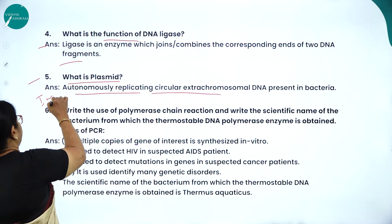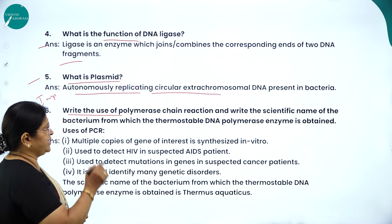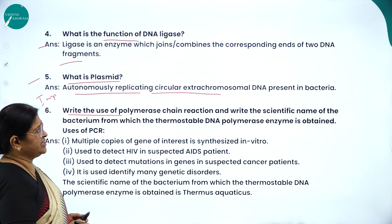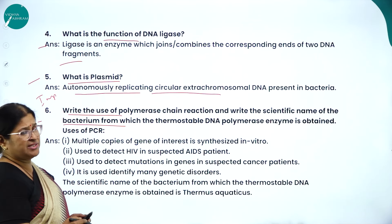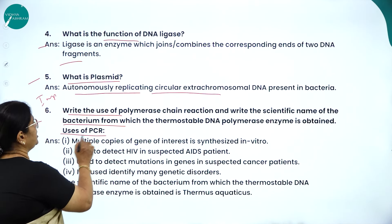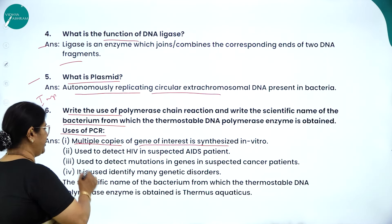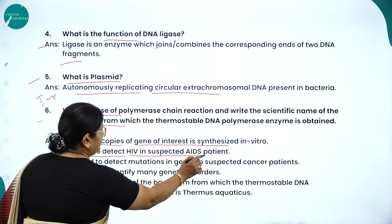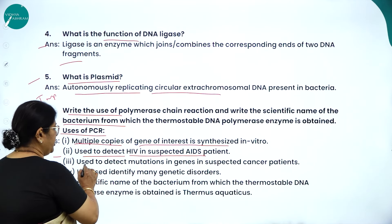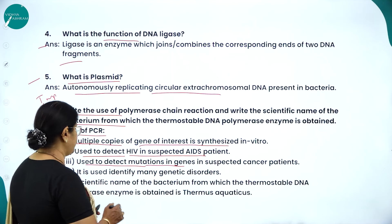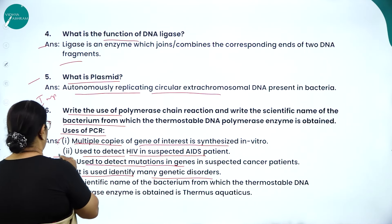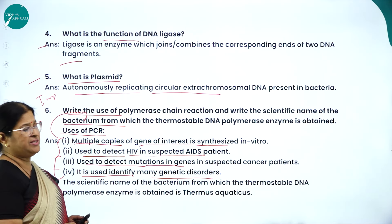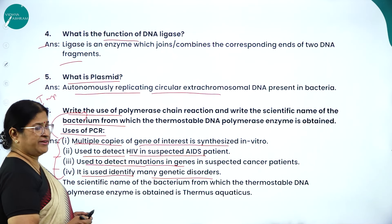Uses of PCR (polymerase chain reaction): multiple copies of the gene of interest are synthesized in vitro; used to detect HIV in suspected AIDS patients; used to detect mutations in genes in suspected cancer patients; and used to identify many genetic disorders.